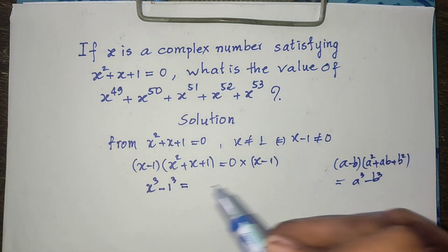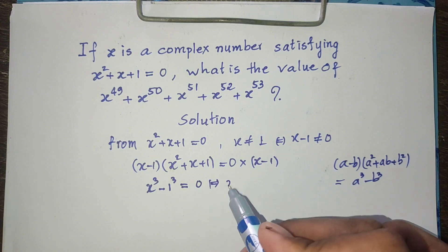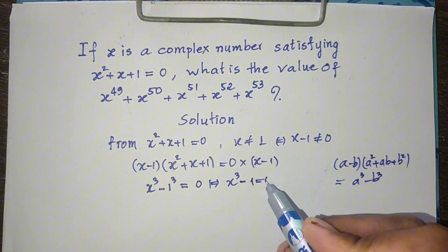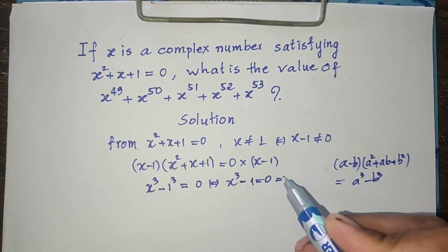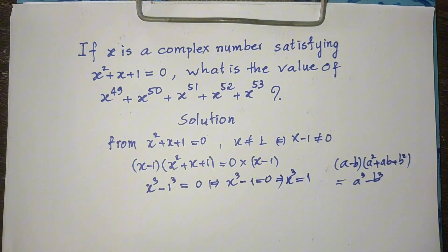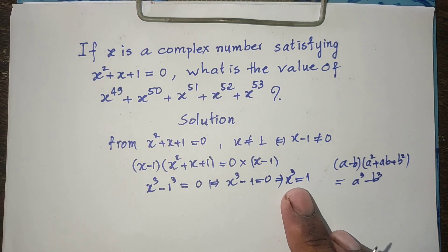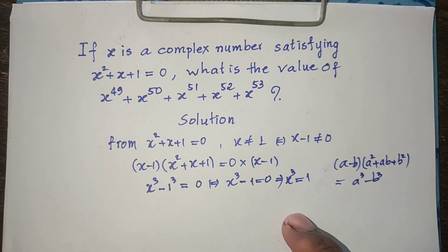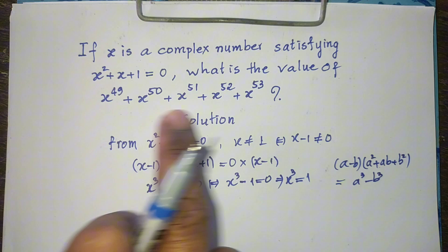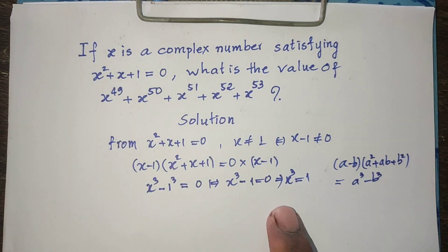Multiplying this out, we get h cubed minus 1 equals 0, so h cubed equals 1. Now I must write the original expression to relate it to h cubed.